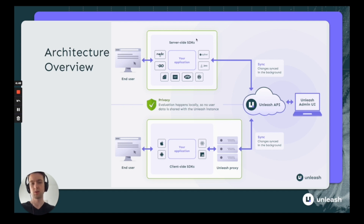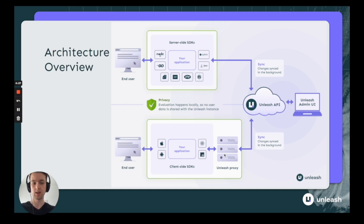Up here at the top you have the server-side SDKs which interact directly with the end users through your applications. Over here on the right you have the Unleash API which holds all of the feature toggle configurations and talks to the server-side SDKs. Down here at the bottom you have the client-side SDKs that interact with your end users and with the Unleash proxy. The Unleash proxy syncs with the Unleash API to fetch those feature toggles, and the Unleash API is set up through the Unleash admin UI or through admin API tokens.